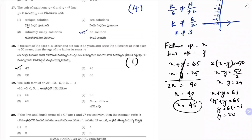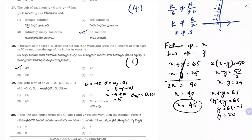15th term of an AP. First term a = −10. Common difference d = a₂ − a₁ = −5 − (−10) = 5. a₁₅ = a + 14d = −10 + 14 × 5 = −10 + 70 = 60. Correct option is 2.